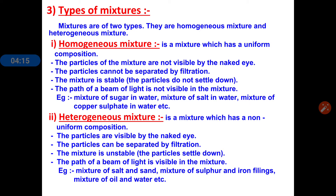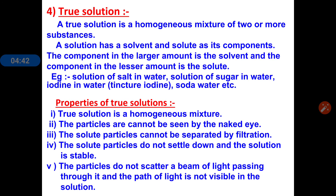Examples of heterogeneous mixture include: mixture of sand and salt — we can easily identify both components. Mixture of sulfur and iron filings — we can easily identify iron filings and sulfur separately. Mixture of oil and water — we can clearly see that oil forms a different layer and water forms a different layer. These are all examples of heterogeneous mixture.